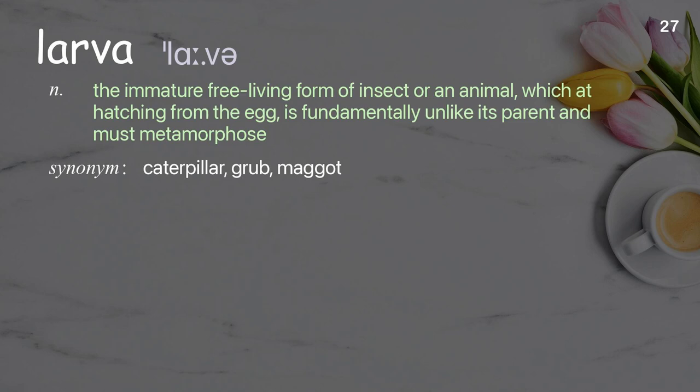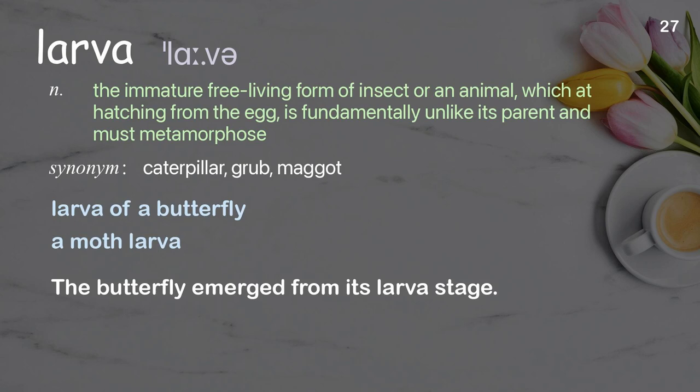Larva: the immature free-living form of an insect or an animal, which having hatched from the egg, is fundamentally unlike its parent and must metamorphose. Examples: larva of a butterfly, a moth larva. The butterfly emerged from its larva stage.